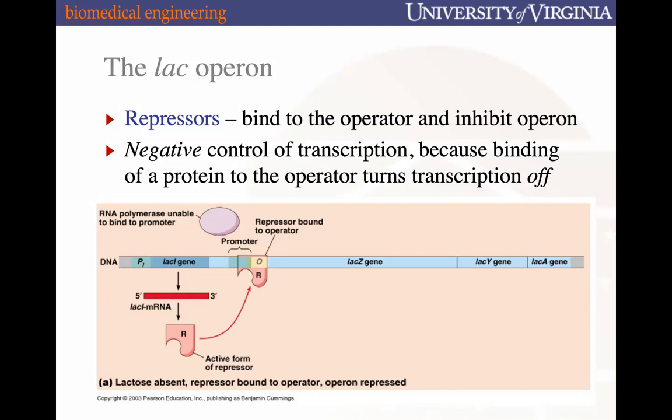Repressors bind to the operator and inhibit the operon — they inhibit RNA polymerase from binding to the promoter or from moving down and transcribing the operon. This is an example of negative control of transcription, whereby the repressor protein binds to the operator and inhibits transcription of the operon.